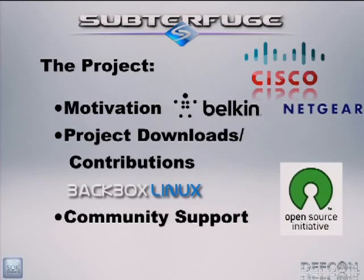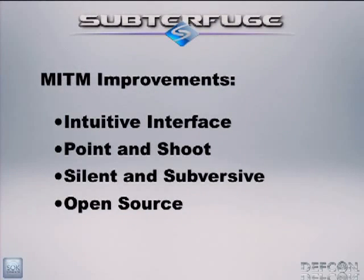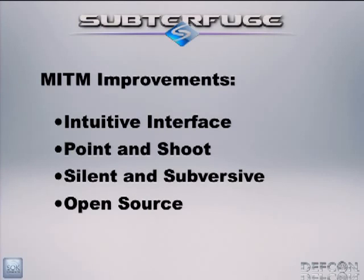Subterfuge has a couple of improvements over most man in the middle tools. First and foremost, it has a very intuitive interface that's extremely easy to use. Whenever I'm trying to use Cain, I can never find the button to pull up that menu to do what I'm trying to do — it's just too busy. Subterfuge is not that. Subterfuge is there to demonstrate the vulnerability, exploit it, and get what you're trying to get — no ifs, ands, or buts.